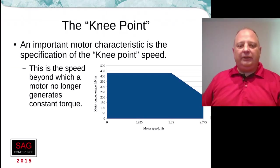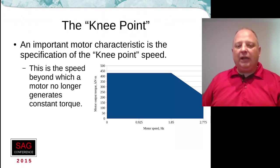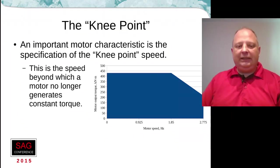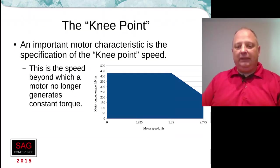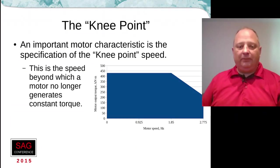Another characteristic of a large mill motor is that the torque output is generally going to be constant up to some rated speed. We use the term 'knee point' for this. On the diagram on the screen, you can see that the torque is relatively constant from zero motor speed up to a rated speed — in this case 1.85 Hz. Beyond that speed, you can no longer generate full torque with that motor and the torque drops off.